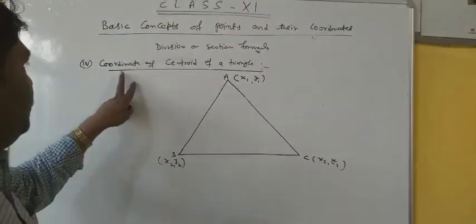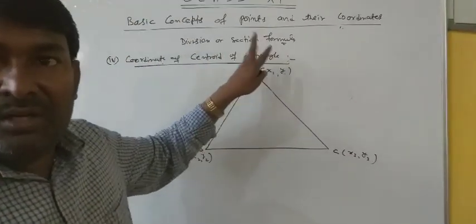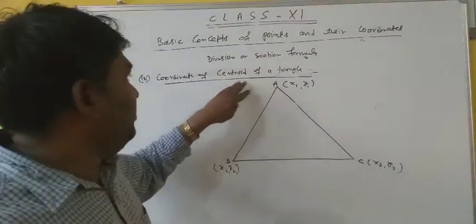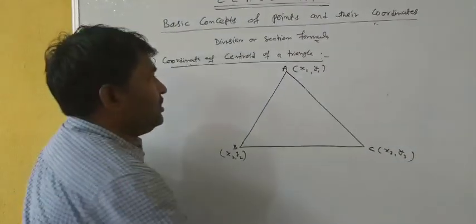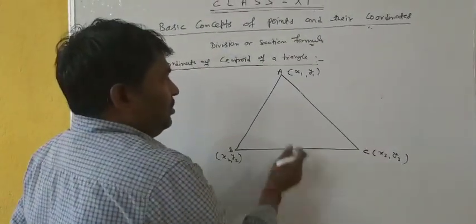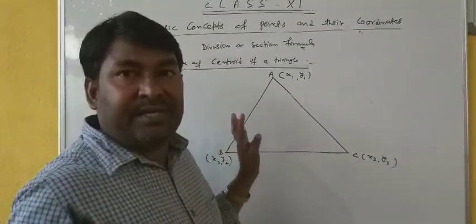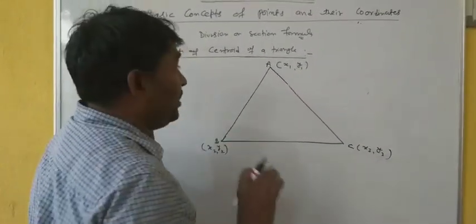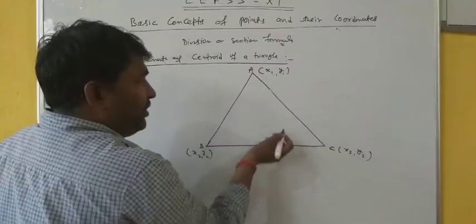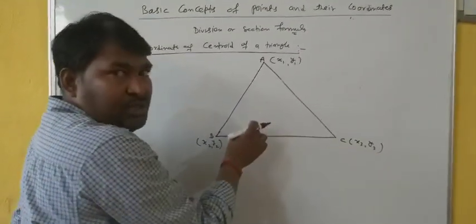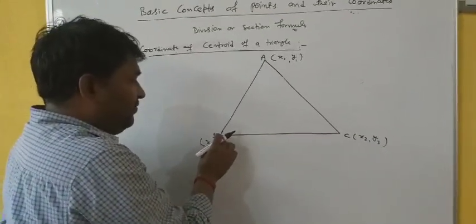Since you have to find the coordinate of the centroid of a triangle, first of all you need to know about the centroid — what is centroid? Centroid is the point of intersection of medians. What are medians? Medians are the lines joining the midpoint of a side to the front vertex of a triangle.